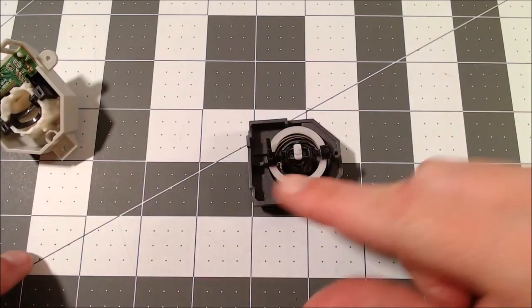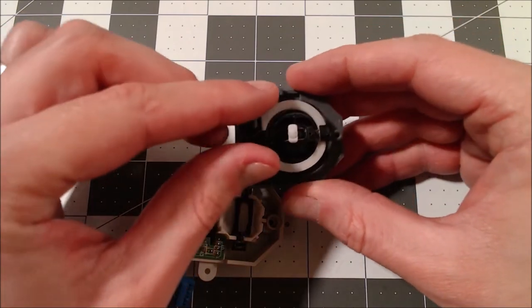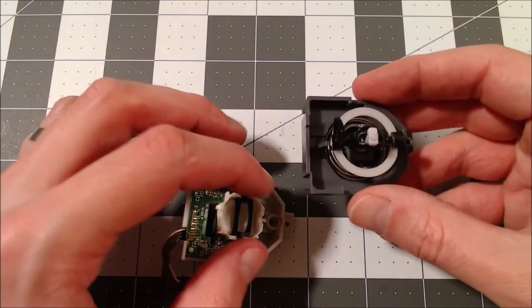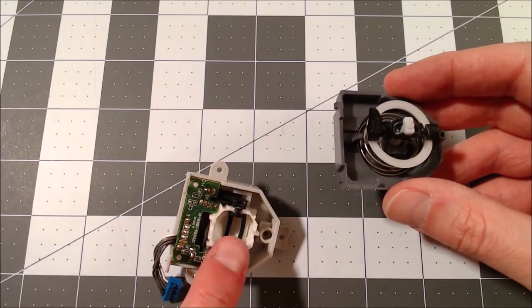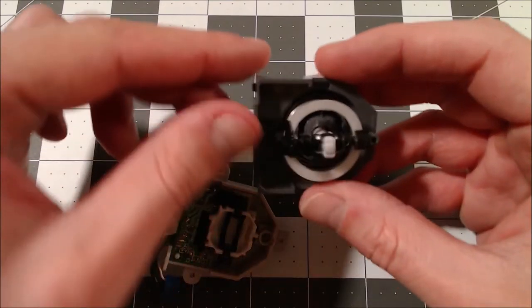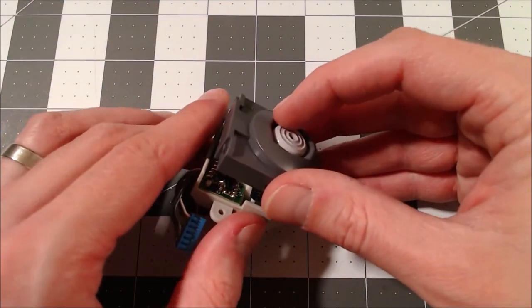So with this gear piece facing towards the back, we can bring things back together. Make sure this black piece is roughly in the center of the white bowl. And kind of just put them together.